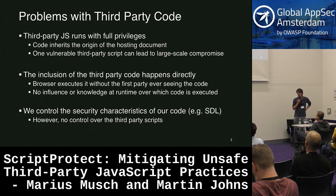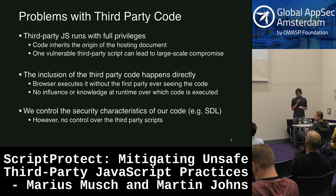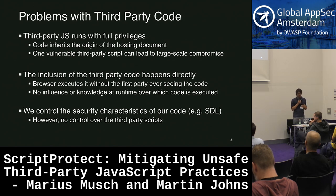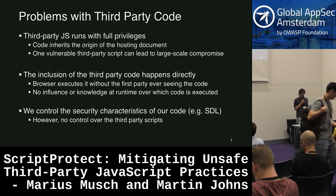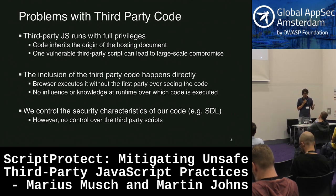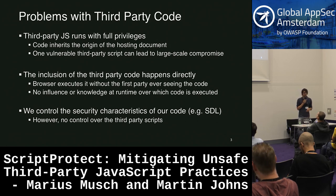Why is this an issue? As developers, we control our own infrastructure, so for first-party code we could do something — for example, as shown in a talk yesterday, you could use linters to look for unsafe assignments like innerHTML. You could have a secure development lifecycle. But that only works for the code that you control. For anything you load from a third party, you have no idea what security measures they are taking.